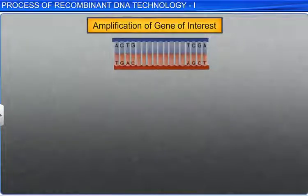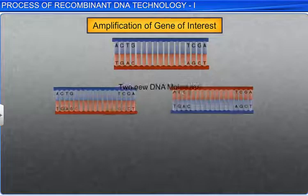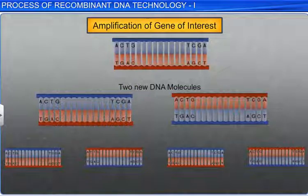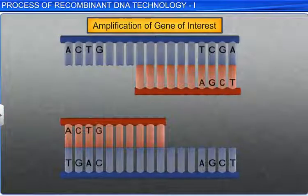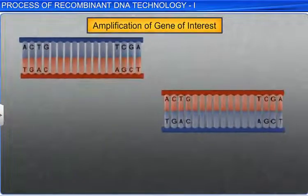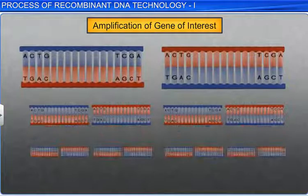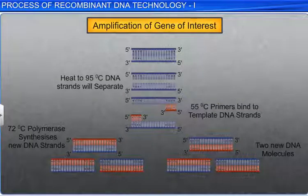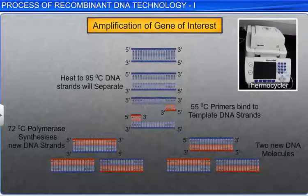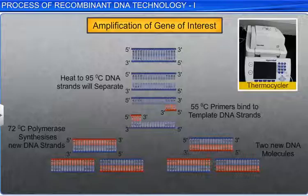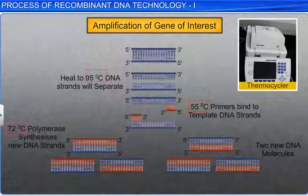Later, each of these strands can be used to create two new copies every time. The cycle of denaturing and synthesizing DNA is repeated 30 to 40 times to get 30 to 40 billion copies of the original DNA. PCR is an automated technique which can be completed in just a few hours. It is executed by a machine called a thermocycler, which is programmed to alter the temperature of the reaction every few minutes to allow DNA denaturing and synthesis.